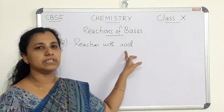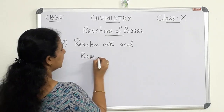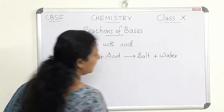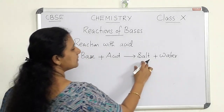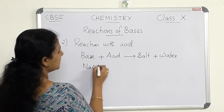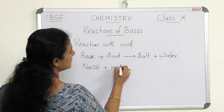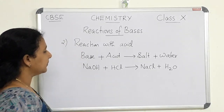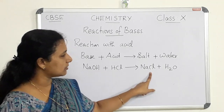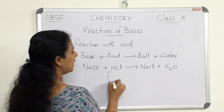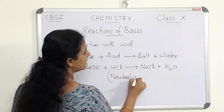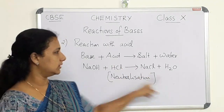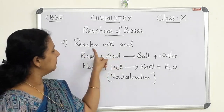The next reaction is reaction with acid. Base reacts with acid gives salt and water. This we have also studied in the case of acids. The example is: sodium hydroxide plus hydrochloric acid produces sodium chloride and water. This reaction is known as the neutralization reaction — the reaction between acid and base produces salt and water. This is the second reaction of base, that is, reaction with acid.